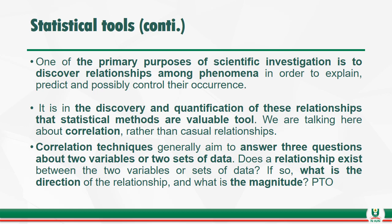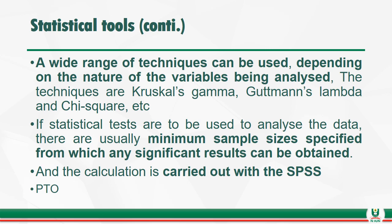It is in the discovery and quantification of relationships that statistical methods are valuable. We are talking here about correlation rather than causal relationships. Correlation techniques generally aim to answer three questions about two variables or sets of data: does a relationship exist between the two variables? If so, what is the direction of the relationship? And what is the magnitude of the relationship? A wide range of techniques can be used depending on the nature of the variables being analyzed — these include Kruskal, Gamma, Goodman's Lambda, and Chi-square.